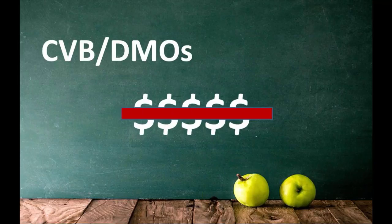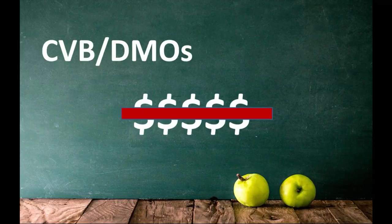CVB services are free to planners because these nonprofit organizations are funded by stakeholders — those vested in tourism in their destinations — and through local tax assessments collected on behalf of the meetings and marketing industry. Planners have already paid for CVB services through their attendees and the TOT tax. Everyone who meets or stays in a hotel in a destination has tax assessments collected, and those fund rich programs of resources for planners.